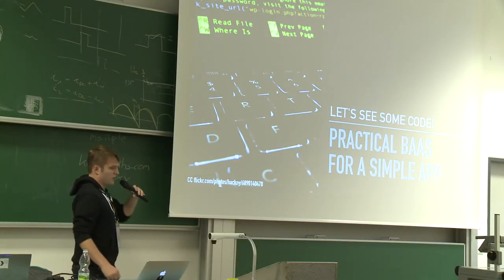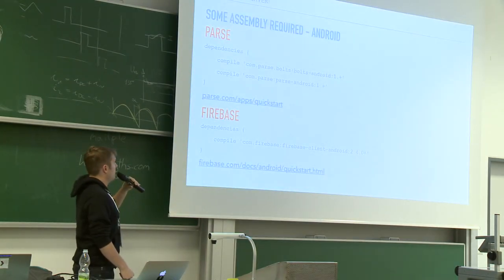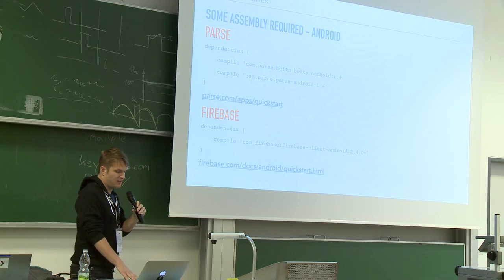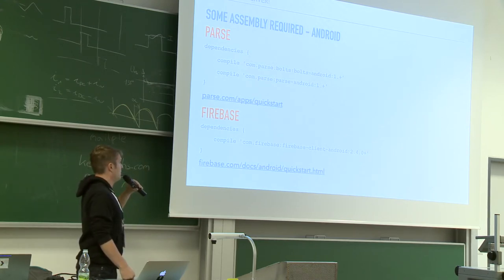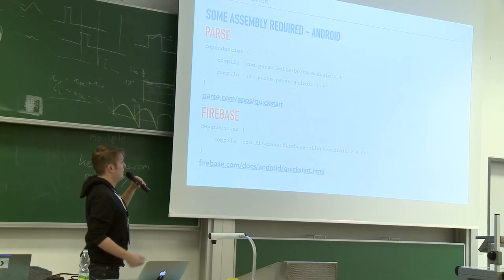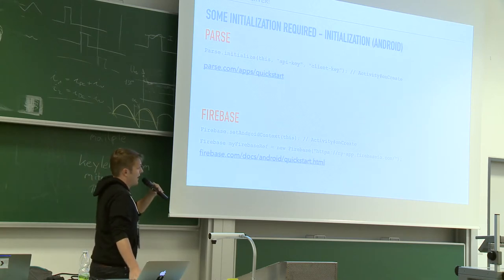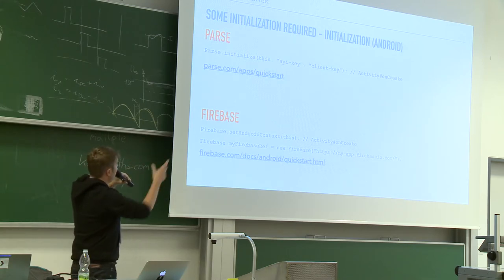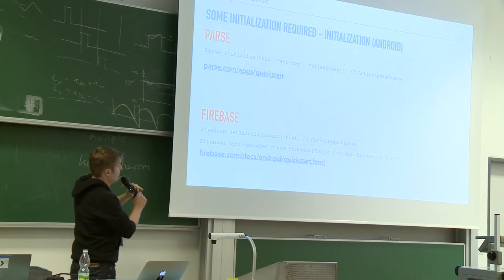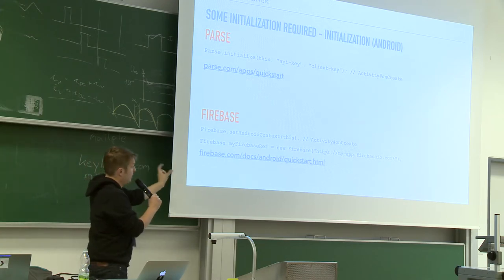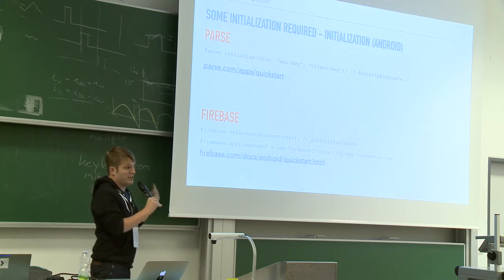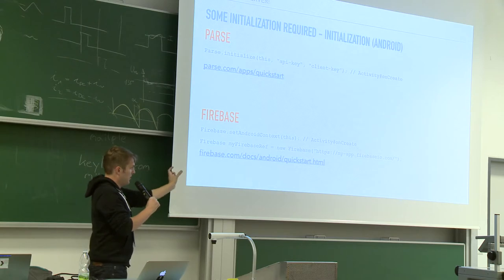Let's finally see some code. These are Android code examples but very straightforward. You drop some dependencies into your Gradle file and you're ready to use the library. That brings you to initialization — both in your activity's onCreate, you initialize it with the context and give it an API key or client key in Parse's case. In Firebase, you don't have an API key; you actually have a URL. When you create a Firebase application, you can either give it a specific name or it'll generate one — much like Heroku, a funny name with a number that you reference directly.